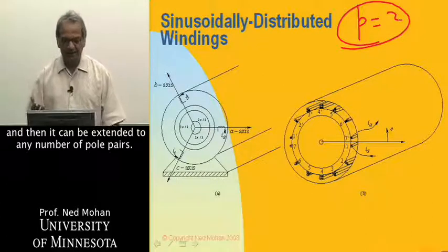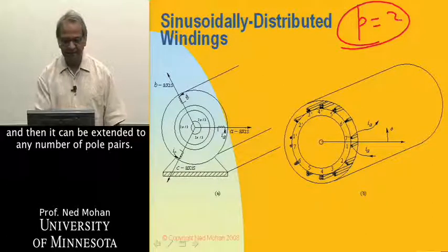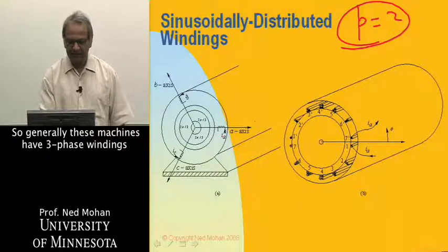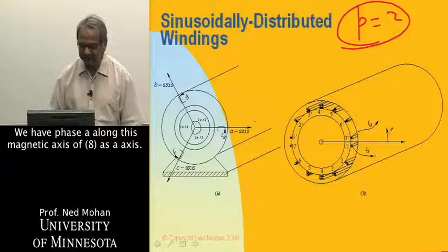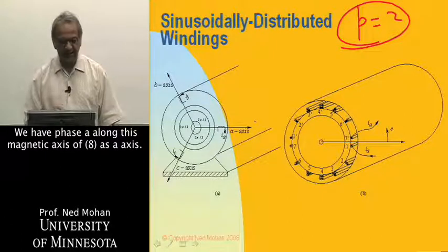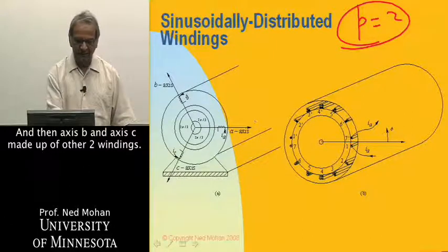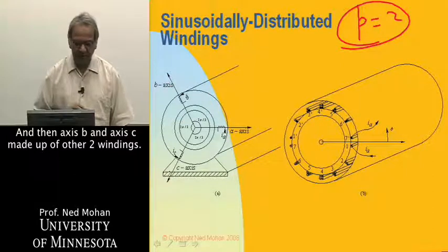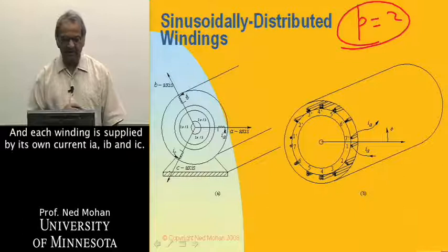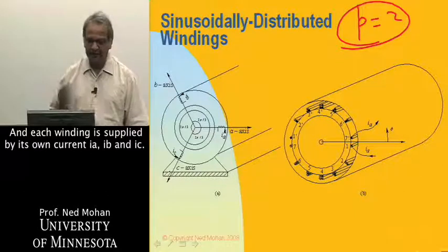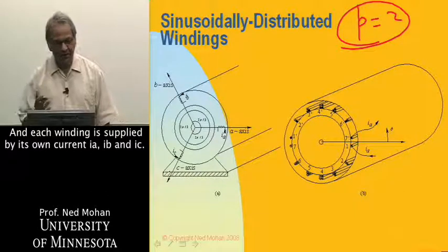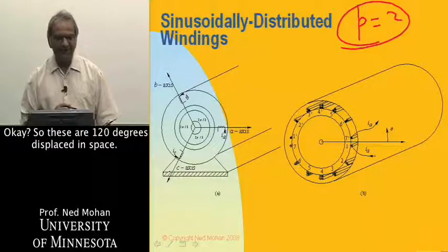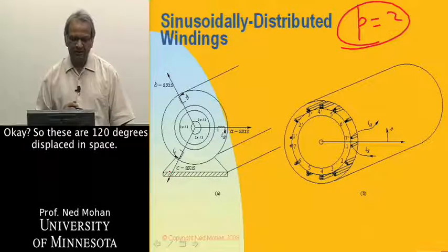So generally, these machines have three-phase winding, as it's shown here in figure A. We have phase A along this magnetic axis of it as A axis, and then axis B and axis C made up of other two windings, and each winding is supplied by its own current, IA, IB, and IC. So these are 120 degrees displaced in space.